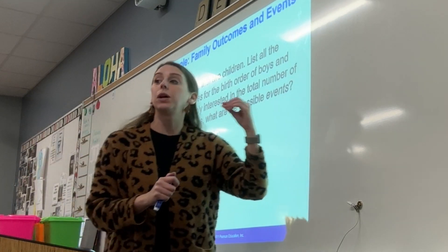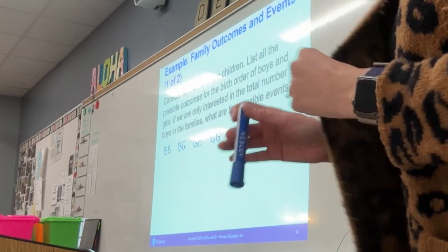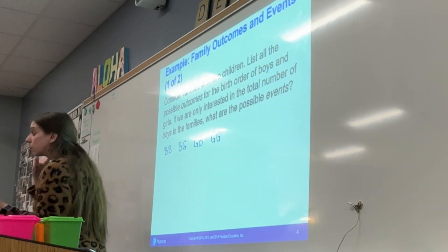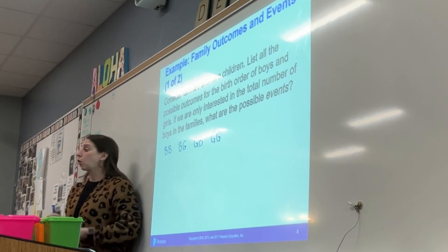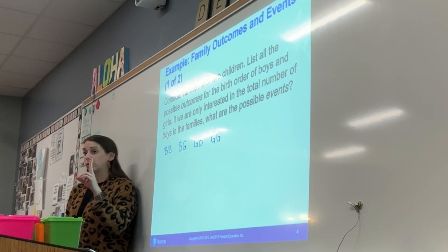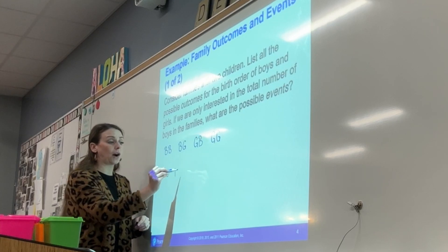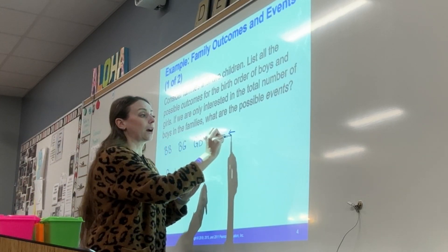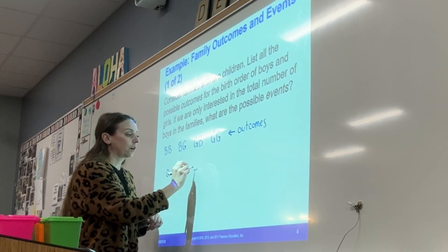So boy, boy, boy, girl, girl, boy, girl, girl — those are our outcomes. When we think about listing all the possible events, we care right now about boys. How many boys total could we have? Two. We could also have zero boys, and we could have one. So those are our possible events: zero boys, one boy, or two boys.